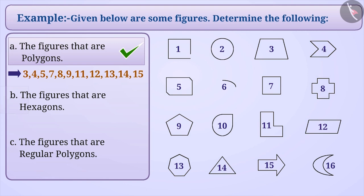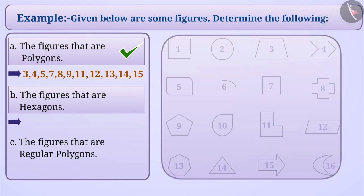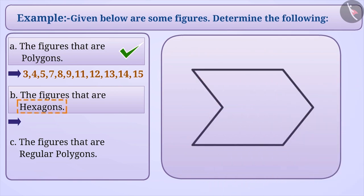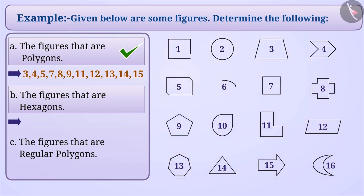Now let's determine those figures which are hexagons. Can you tell how will we identify the hexagons from the given figures? Think for a while. Absolutely right. Polygons with 6 sides are called hexagons. Therefore, we will identify polygons with 6 sides in the given figures. As you can see, figures 4, 5, 11, etc. are polygons made up of 6 sides. So, they are hexagons.